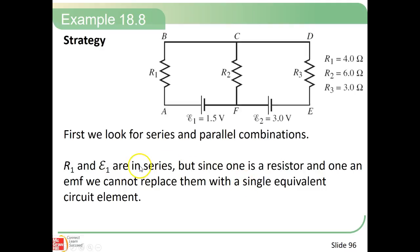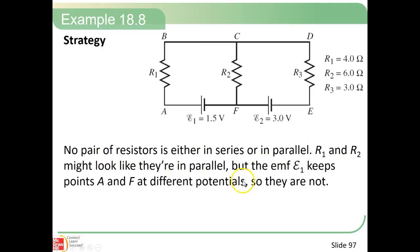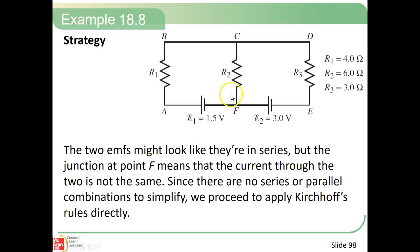First, we're going to look for series and parallel combinations. R1 and E1 are in series, but since one is a resistor and one is an EMF, you can't replace them with a single circuit element. No pair of resistors is either in series or in parallel. R1 and R2 might look like they're in parallel, but they're in series for this EMF, so they're really not in parallel. The two EMFs might look like they're in series, but there's a junction point, so the current through the two is not the same. Since there's no series or parallel combinations, we have to go to Kirchhoff's rules directly.